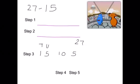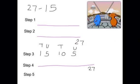Step 4, we need to take away the 5 units first from 27. So if we count back 1, 2, 3, 4, 5, we land on 22.